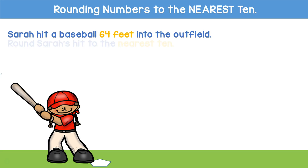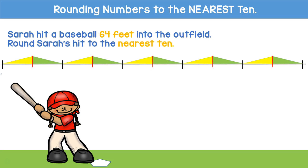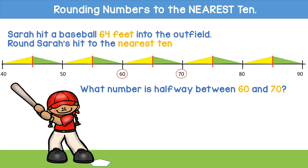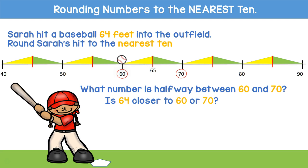Sarah hit a baseball 64 feet into the outfield. Round Sarah's hit to the nearest ten. This number line is counting by tens. We can see that 64 is greater than 60 but less than 70. What number is halfway between 60 and 70? 65. Is 64 closer to 60 or is it closer to 70? We see that it is less than 65, so it is closer to 60. 64 rounds to 60.